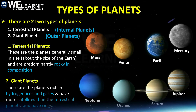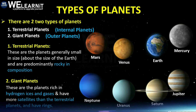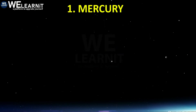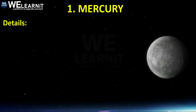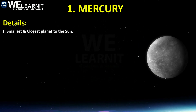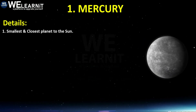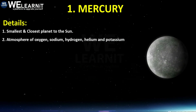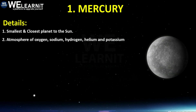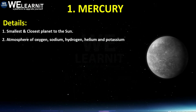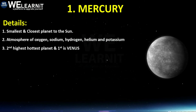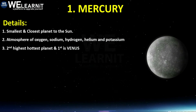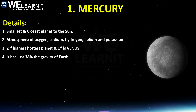Let's study about these planets one by one. The first planet is Mercury. Mercury is the smallest and closest planet to the Sun. Its atmosphere is made up of oxygen, sodium, hydrogen, helium, and potassium. It is the second hottest planet — the first hottest planet is Venus.